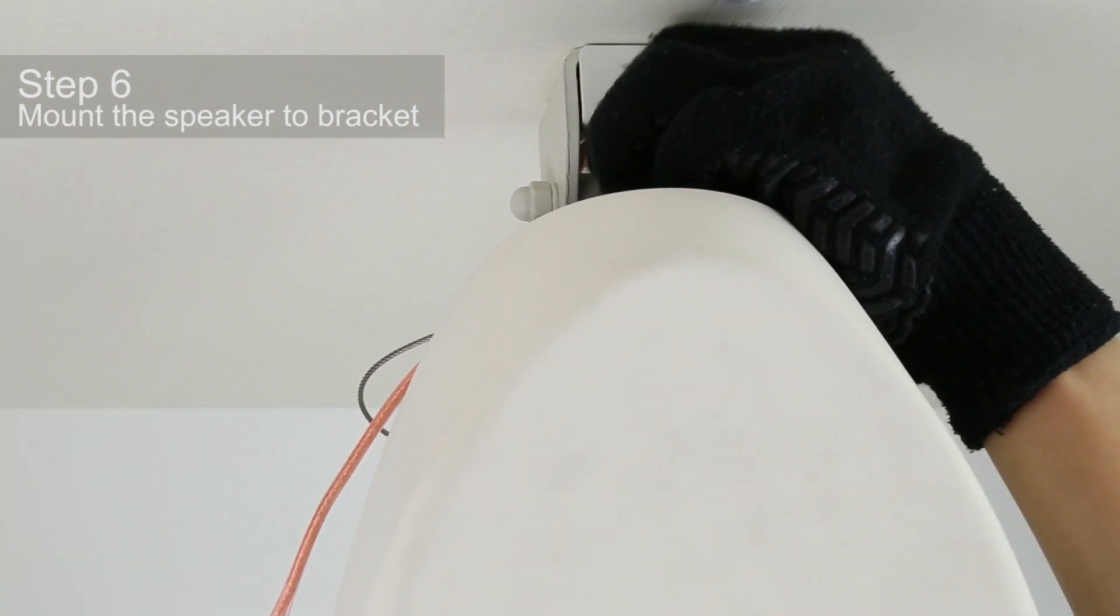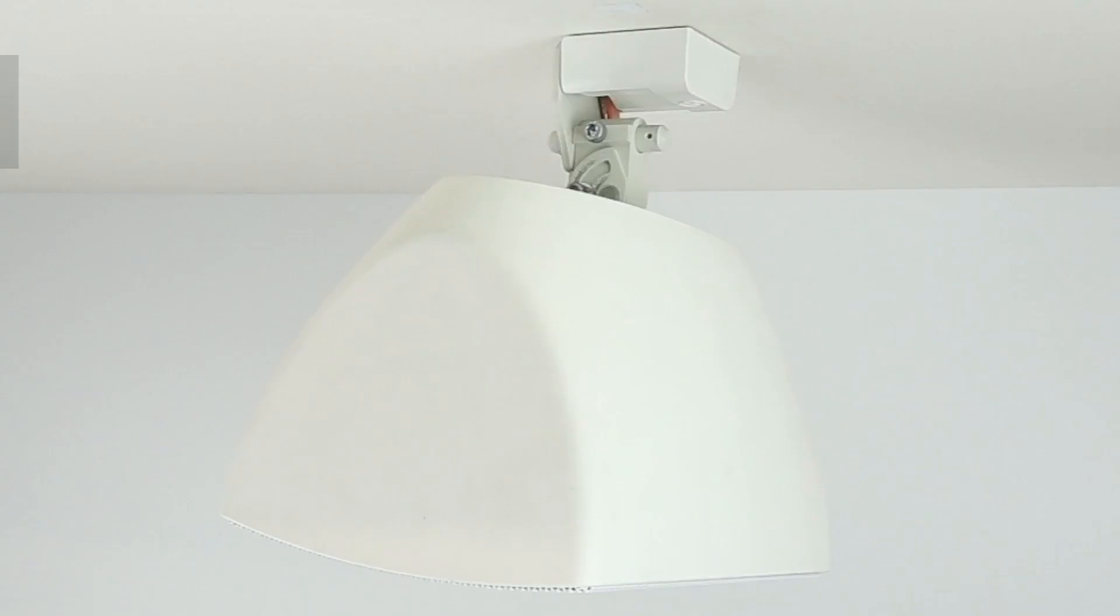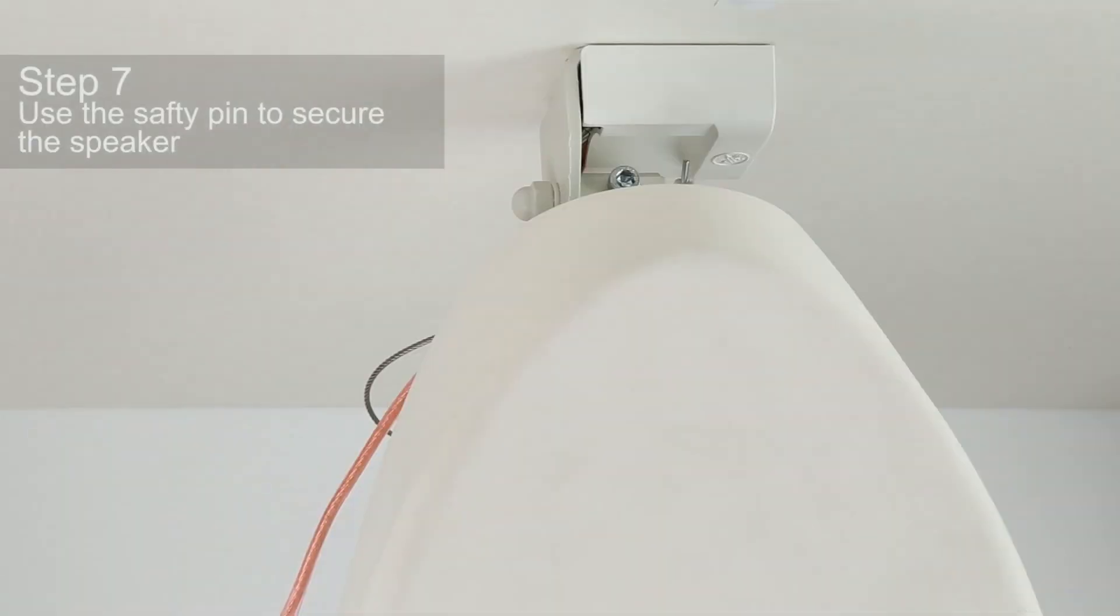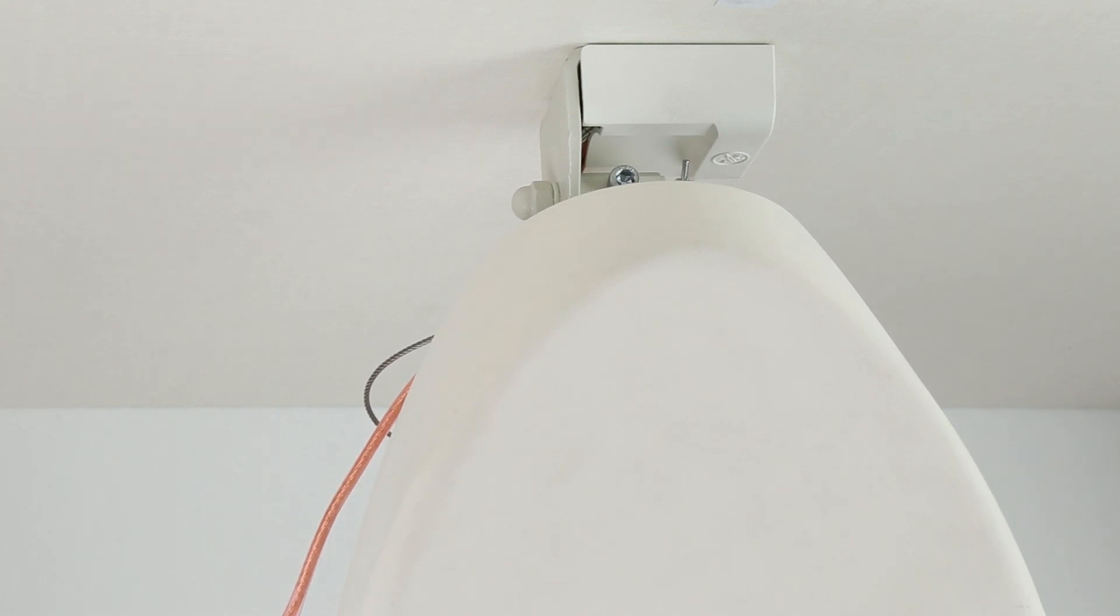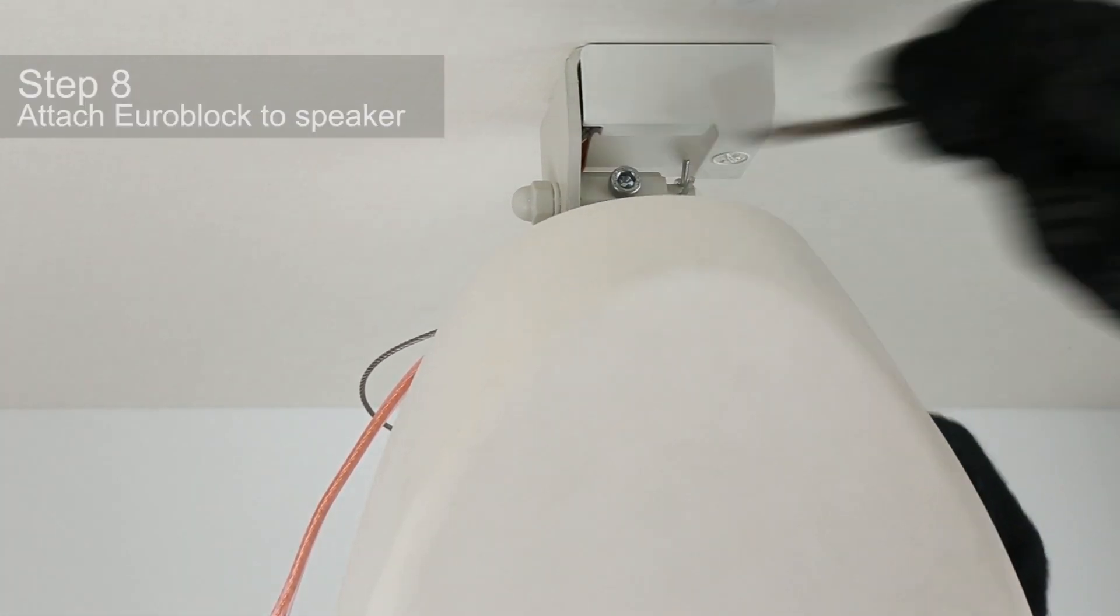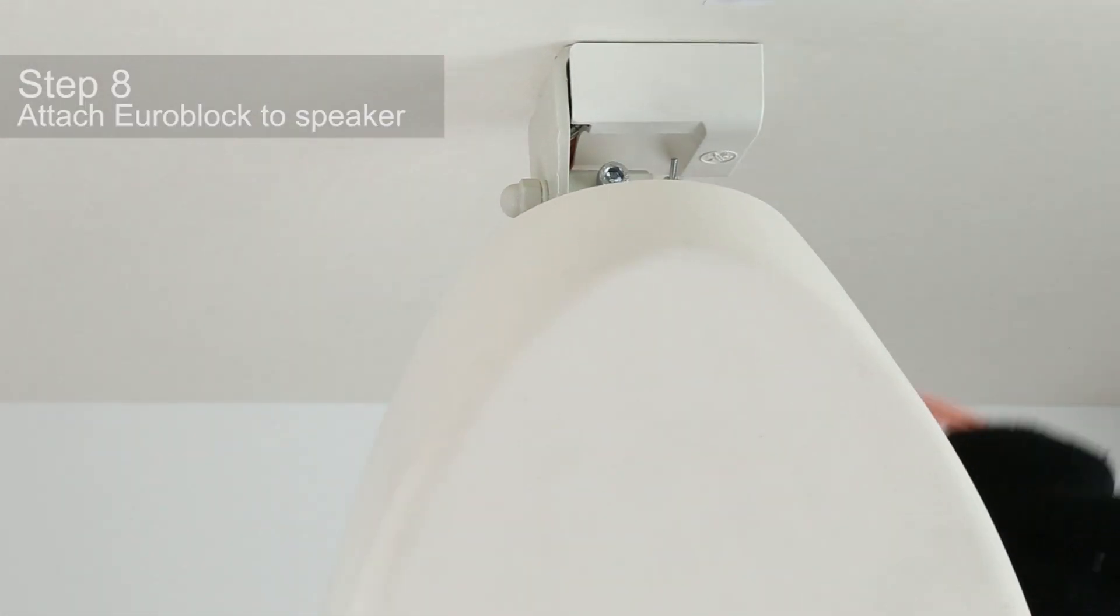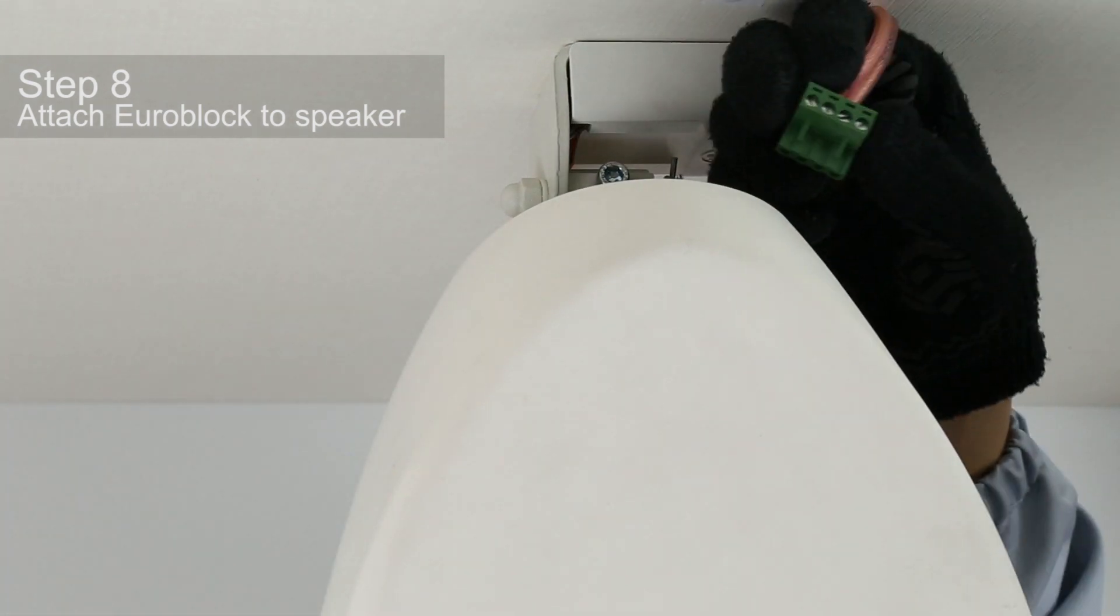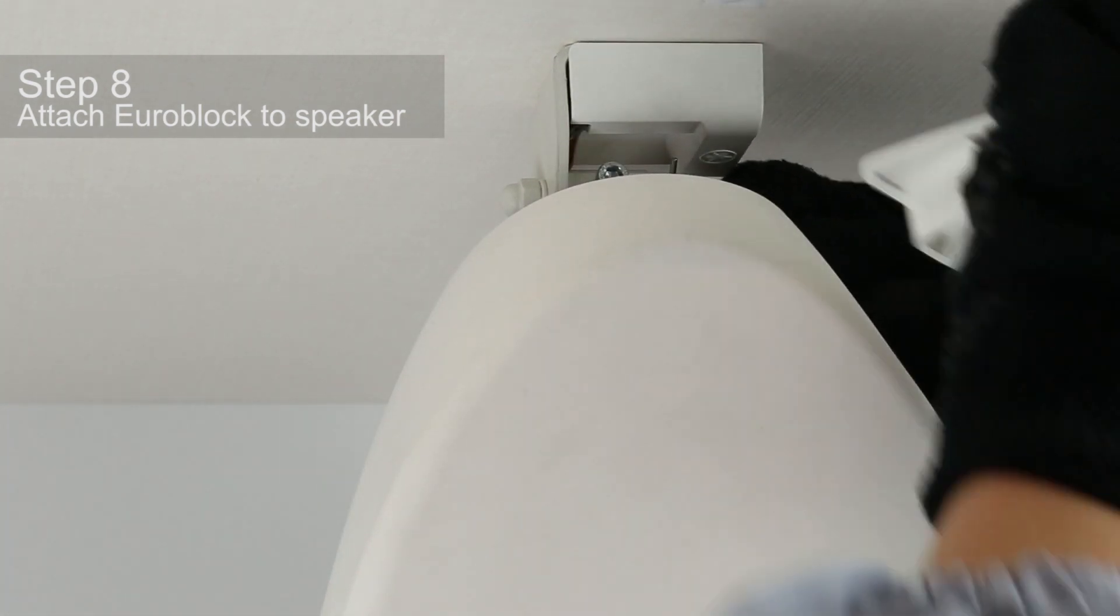Once you've installed the mounting bracket to the bracket base, lightly tighten the bolts with the hexagonal holes by hand. Attach the safety pin to prevent the speaker from falling. Plug the Euroblock connector into the socket in the speaker and attach the terminal cover.